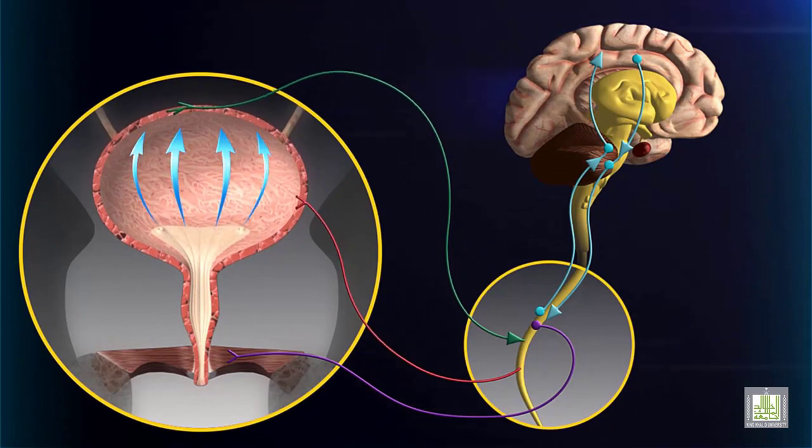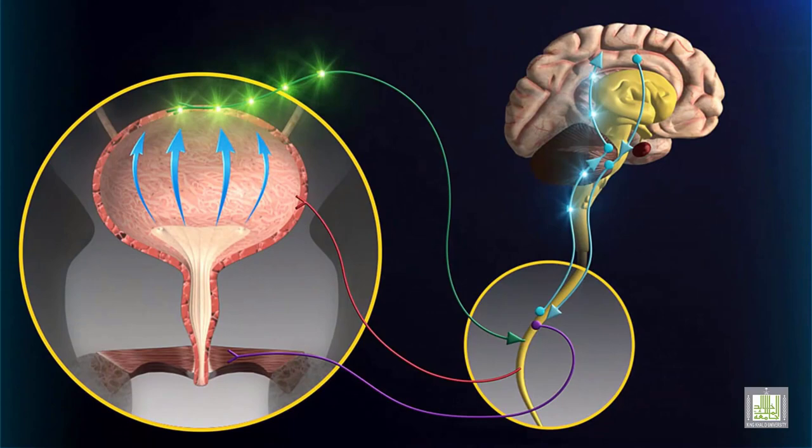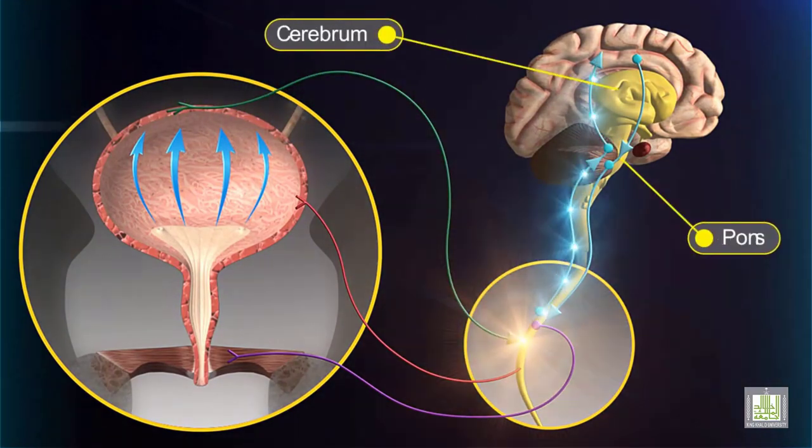The sensory signals to the sacral region of the spinal cord also stimulate ascending pathways to the pons and cerebrum, which results in a conscious desire to urinate.